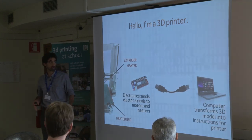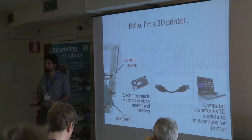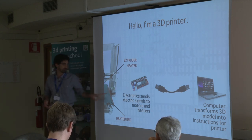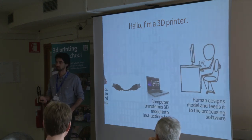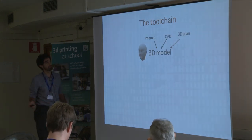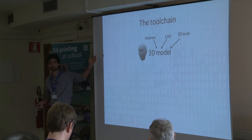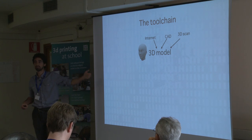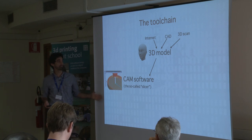The electronic board receives instructions from a computer. Some printers have SD card readers where you put instructions directly on the printer. You have a computer which sends instructions, and electronics converts them to inputs. The toolchain starts from a 3D model - you can get one by downloading ready material, designing your own, or scanning a physical object. You then feed this 3D model to what is called CAM software, or slicer software.